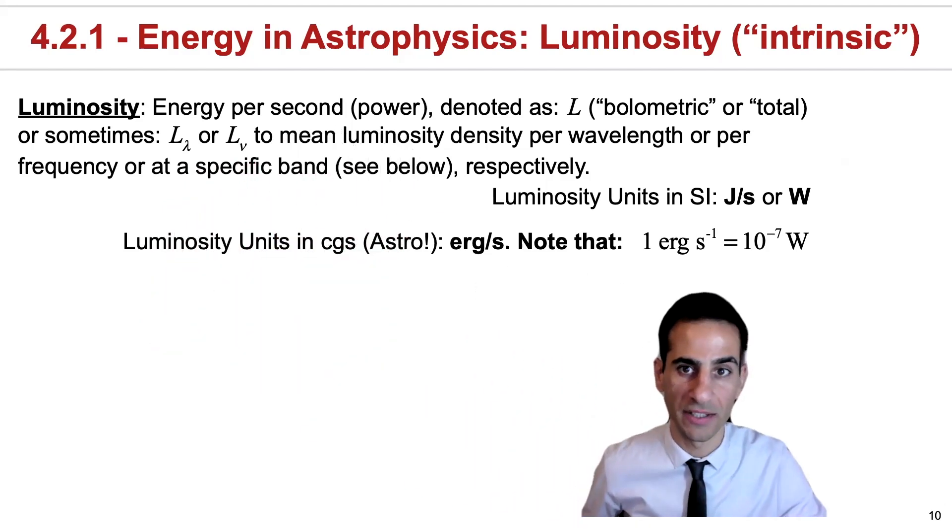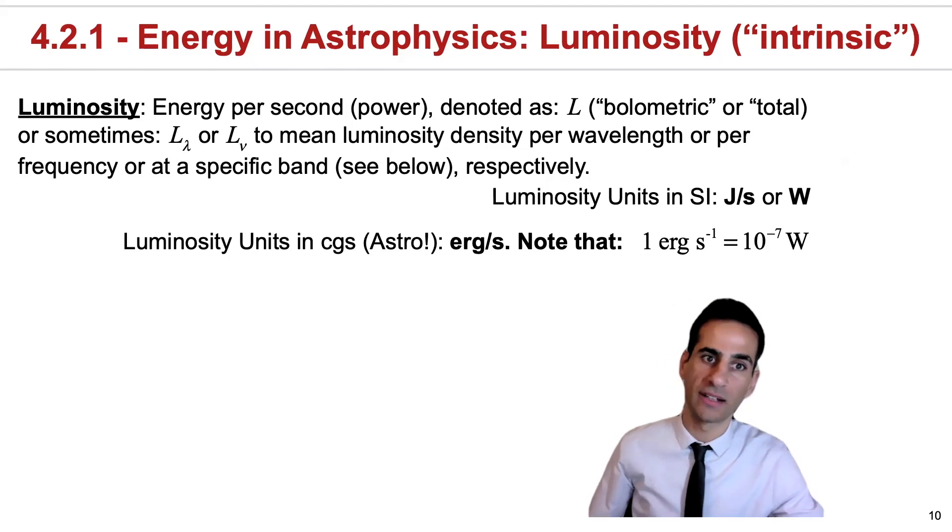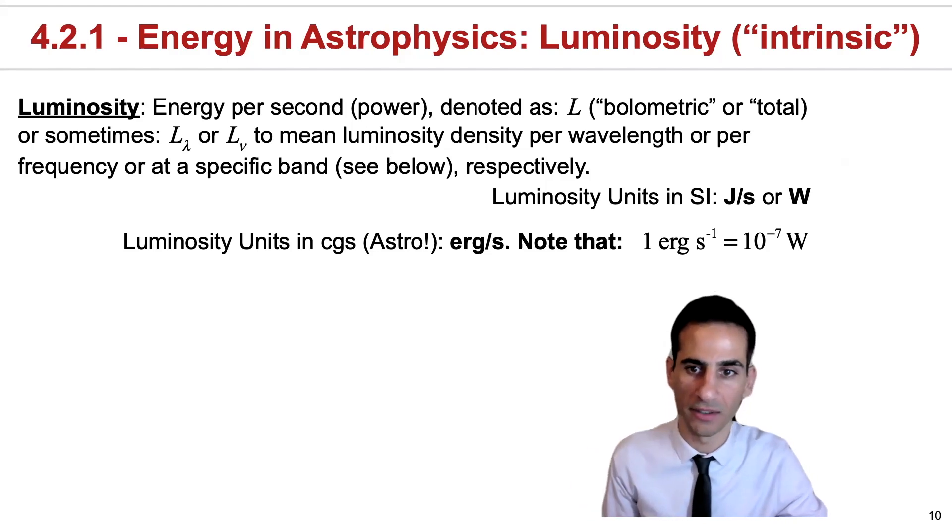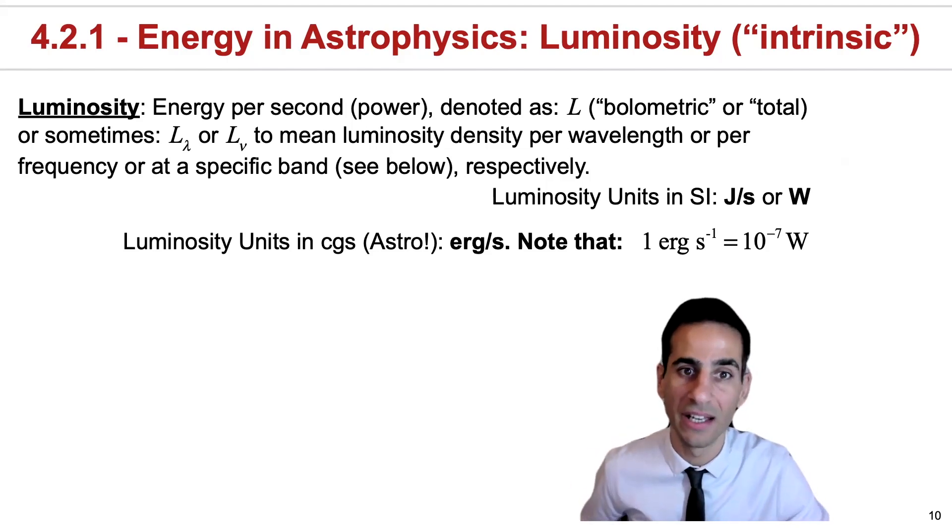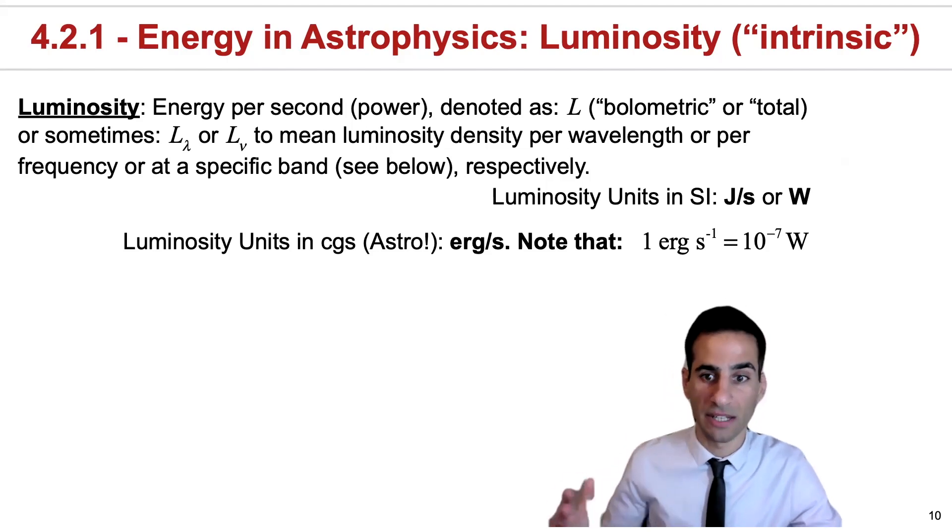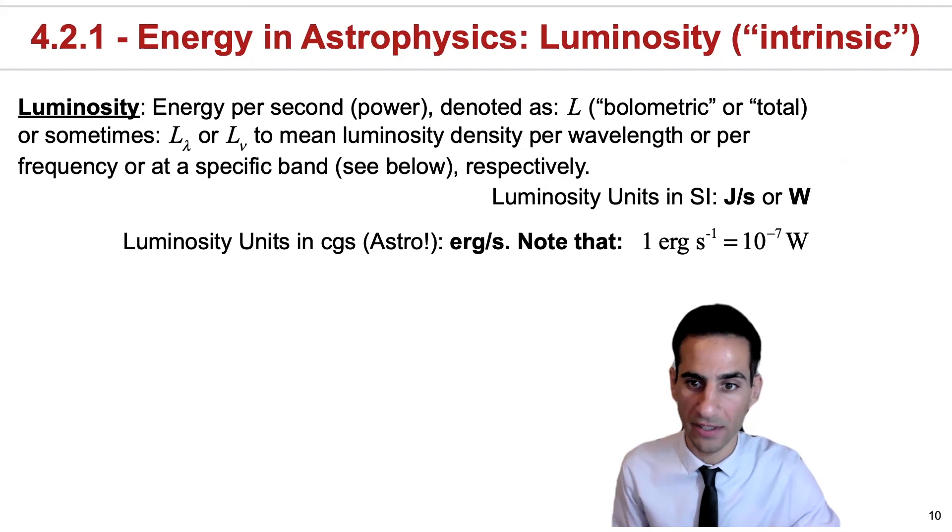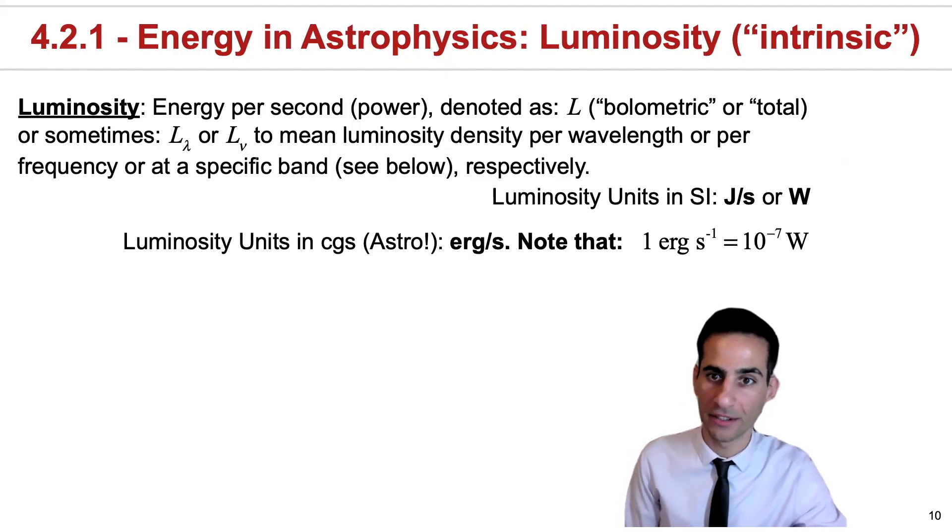That indicates that the luminosity is not volumetric but most likely refers to that specific band, and we're going to see examples of it. Sometimes luminosity can also be per wavelength or frequency. Now the units of luminosity in the international system are very simple: they're just joules per second or watt.